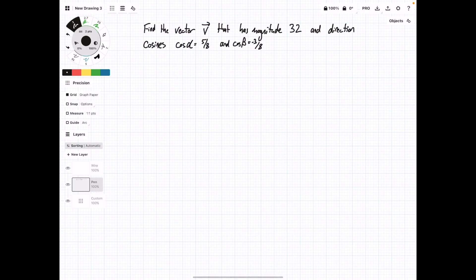Sometimes you can be given the magnitude and direction cosines of a vector, and then you need to find that vector. So, for this example, we're asked to find the vector v that has magnitude 32 and direction cosines cosine alpha equals 5/8 and cosine beta equals negative 3/8. So, I'm going to start by writing out that the magnitude of our vector equals 32, and then I'm going to write out the formulas for finding cosine alpha and cosine beta.